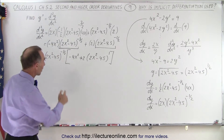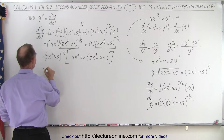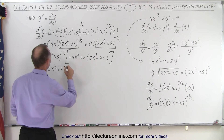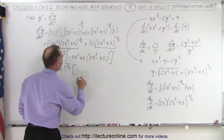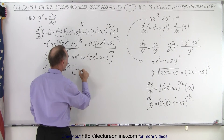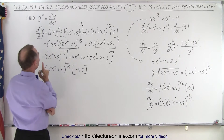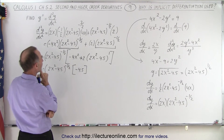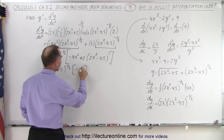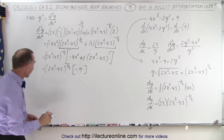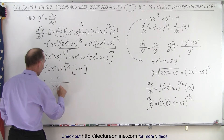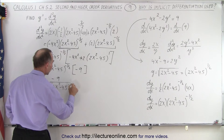So this becomes the quantity 2x squared minus 4.5 to the minus three over two, times what's left: minus 4x squared, plus two times 2x squared minus 4.5 to the first power — because this times this will give me back this. Now we can multiply everything out. We have minus 4x squared and plus 4x squared, so they cancel out, and we're left with 2 times minus 4.5, which is minus 9. So this is equal to minus 9 divided by 2x squared minus 4.5 to the positive three-halves power.